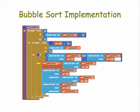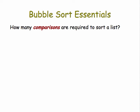So let's take a look at this. First, let's start with bubble sort. Here's the implementation of bubble sort in App Inventor, but let's ignore those details and boil it down to just the question of how many comparisons does bubble sort need to sort a list?